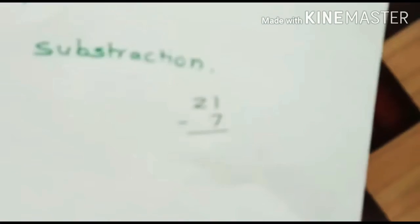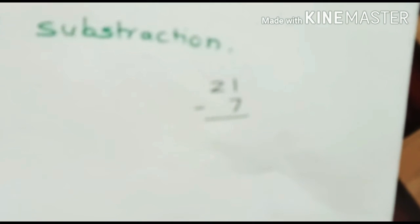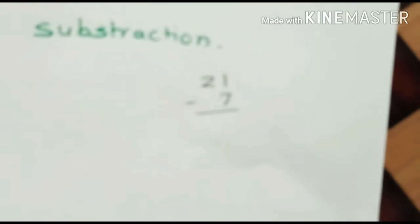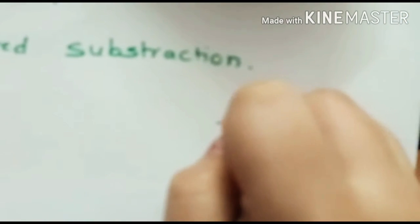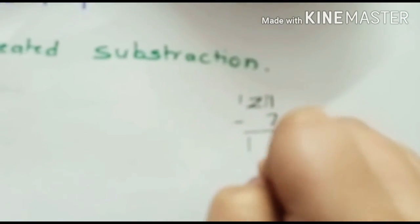Now, let's subtract 7 from 21. After subtracting 7 from 21, I got the answer 14. We will repeat this process unless we get the answer 0.